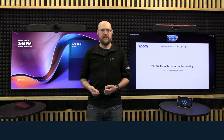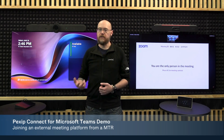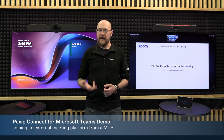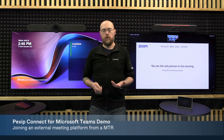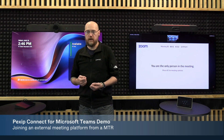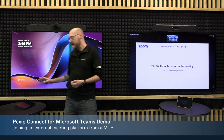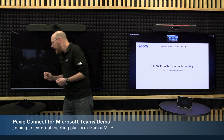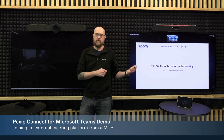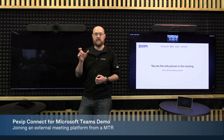Now the question is, what would happen if an organization receives an invite for another platform but they're using MTRs? I have received an invite for a Zoom room. With the Pexip Connect for Microsoft Teams license, I can now go to my MTR and do a SIP call out to this Zoom meeting using the room connector URI.